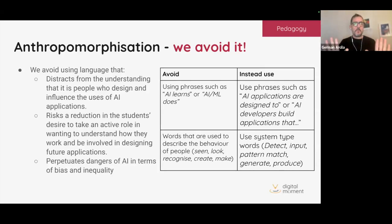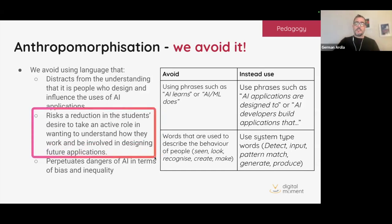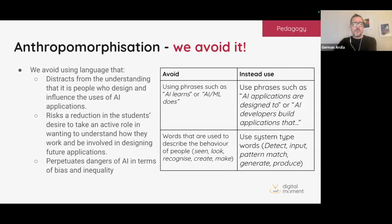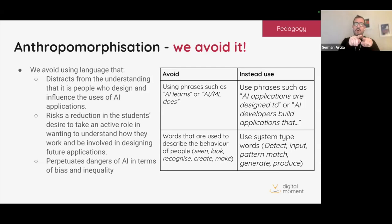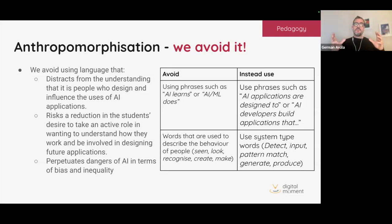Right now, we are collaborators. AI is a tool like a hammer — just a really powerful hammer. There's also a risk of reducing students' desire to take an active role in understanding how these systems work and being involved in designing future applications. I had my own existential crisis thinking: what is my role if AI goes here? But if we frame it as a tool for collaboration and avoid anthropomorphizing, we still have control.